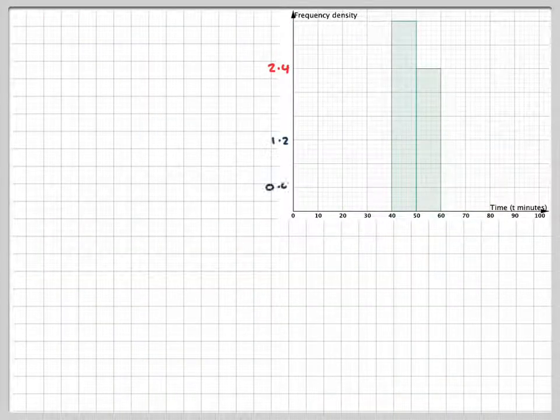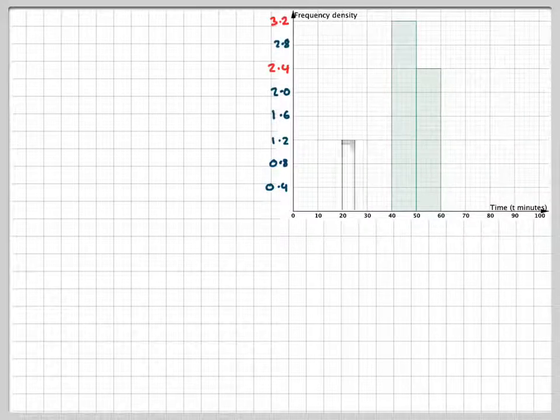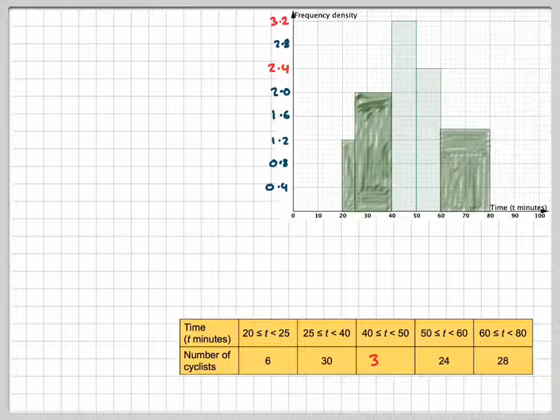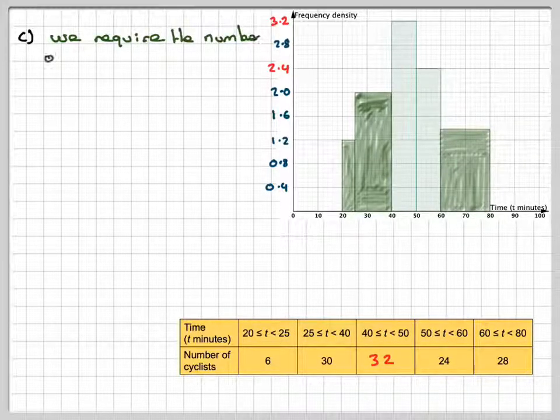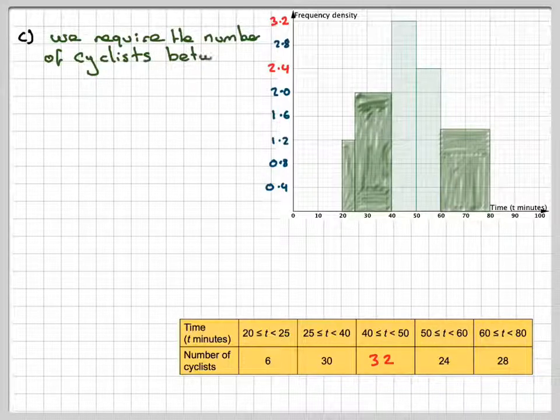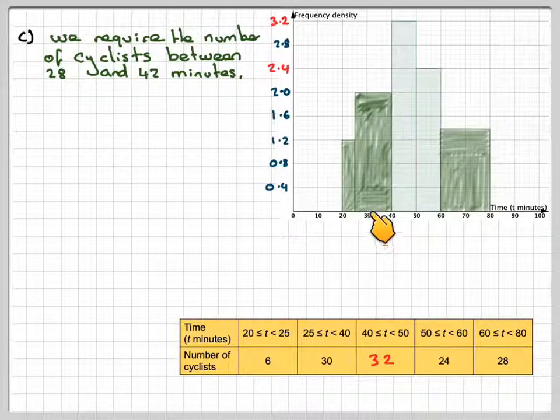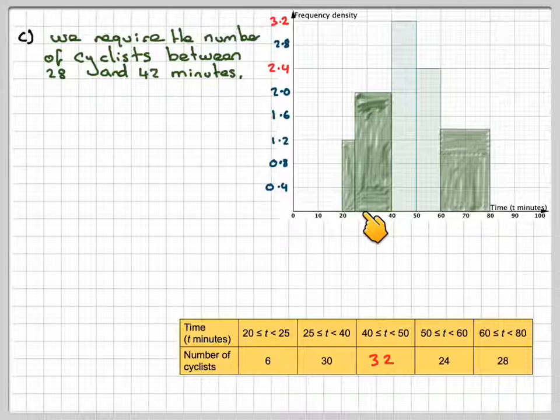We're now going to use this and the table to answer part C. So part C will require the number of cyclists between 28 and 42 minutes. Well, we need to find 28 minutes on here. So each of these one little squares represents 2, so 28 will be here, so we're just drawing a line there.